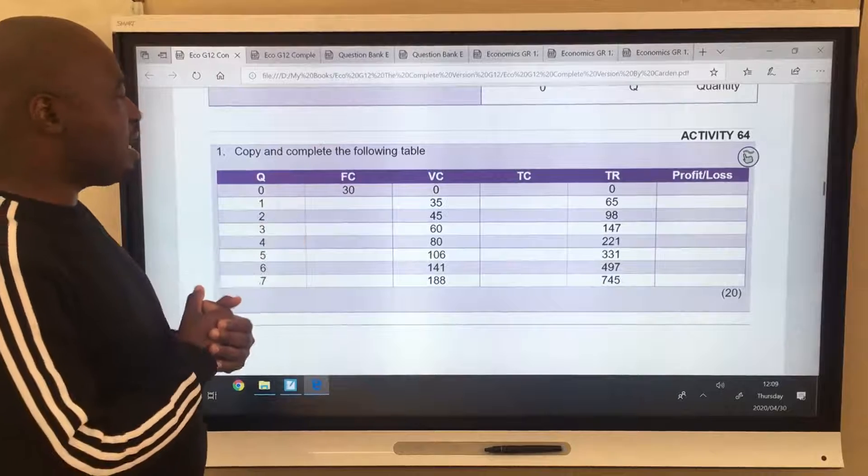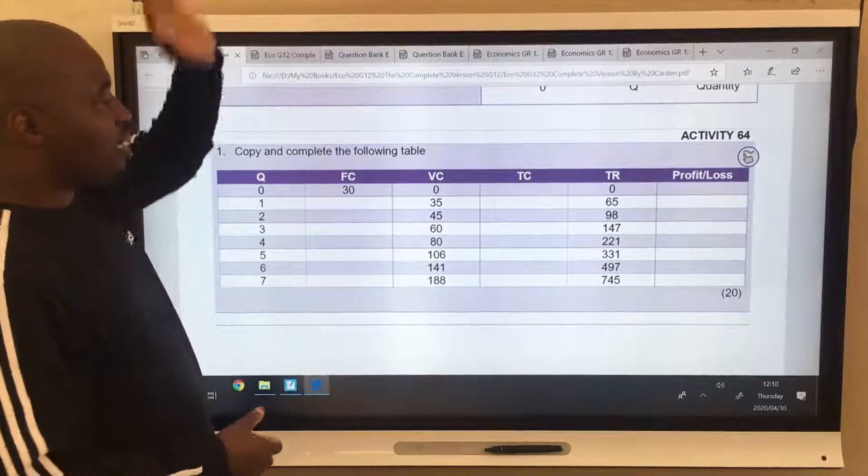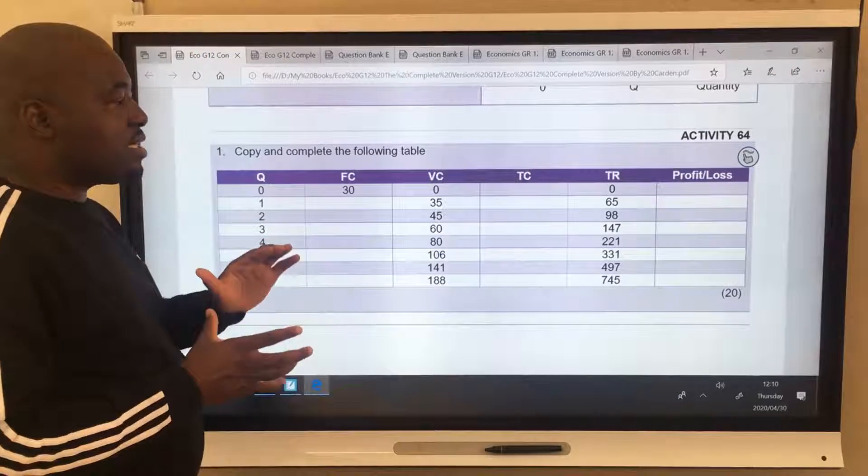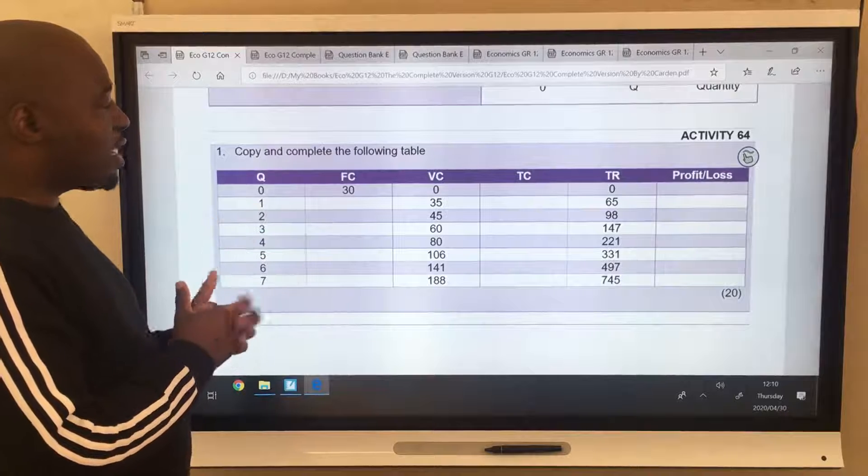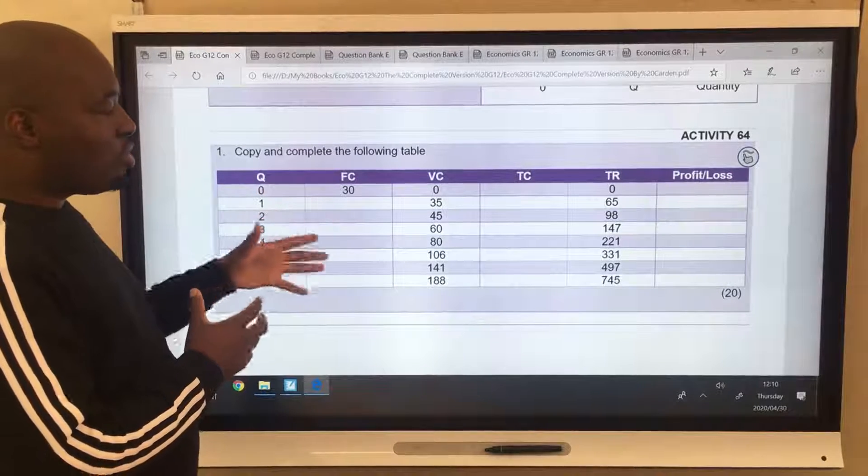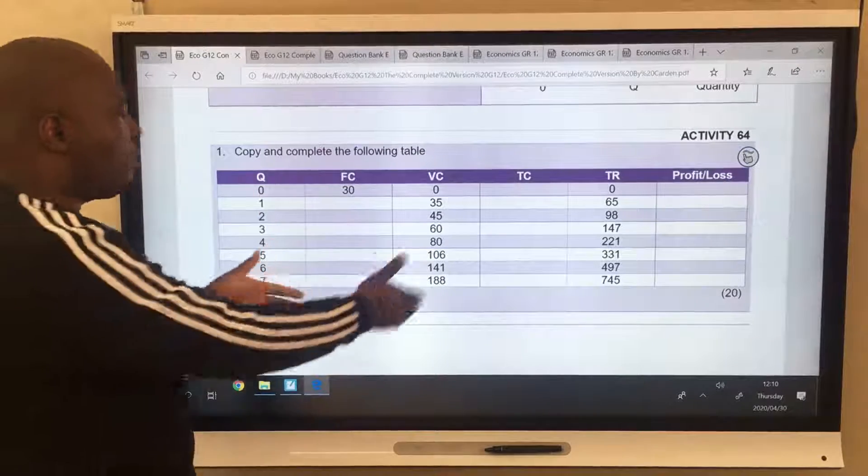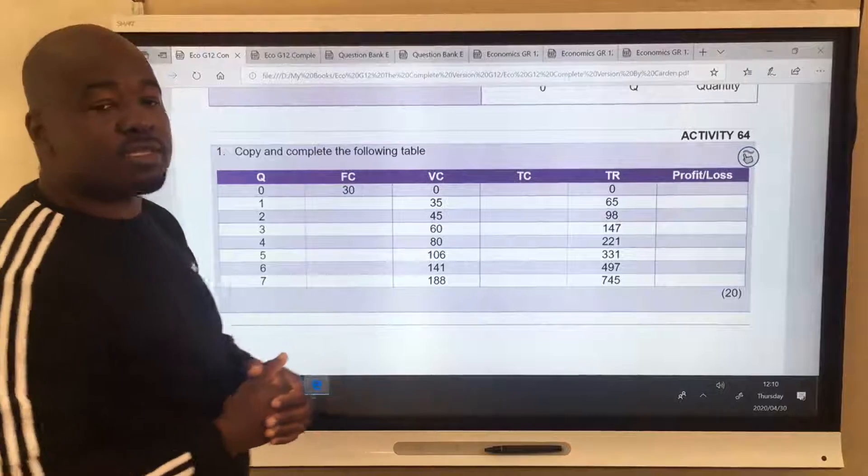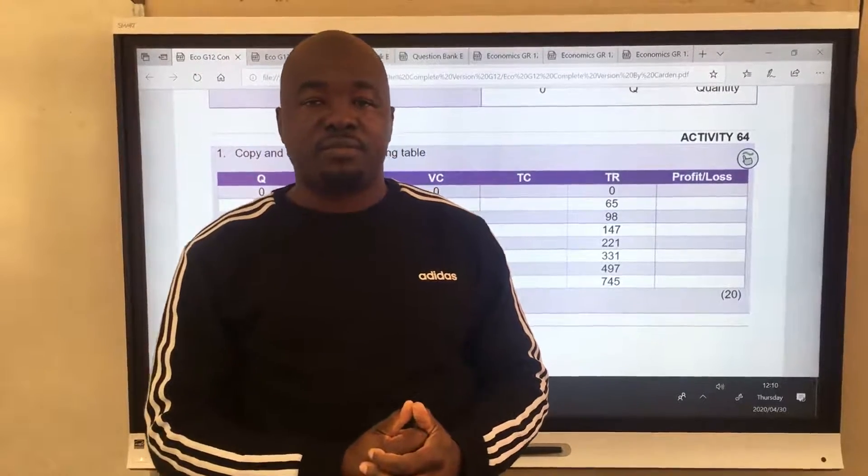So you have activity 64. Now this one is going to be easy. You can go back to the first lesson of this dynamics of imperfect markets. You can see how I calculated those. And then you can try to do the same here. So it's an activity out of 20. Pause the video. Complete this. You'll see the answers in the next lesson. Thank you so much. I'll see you in that lesson.